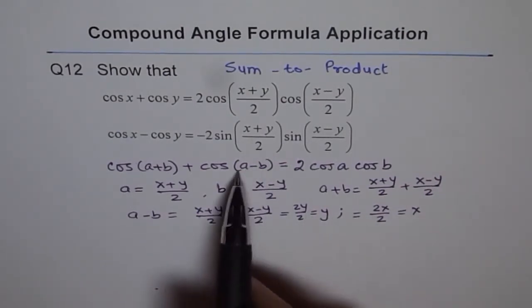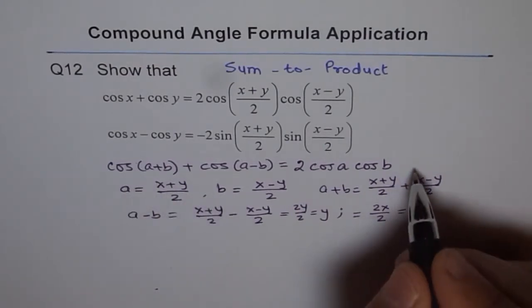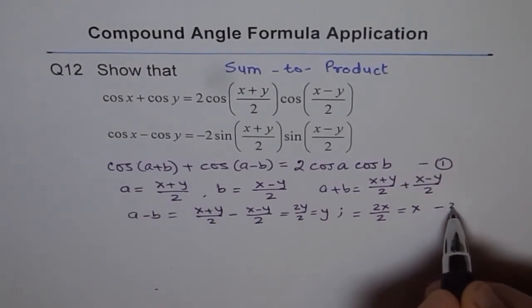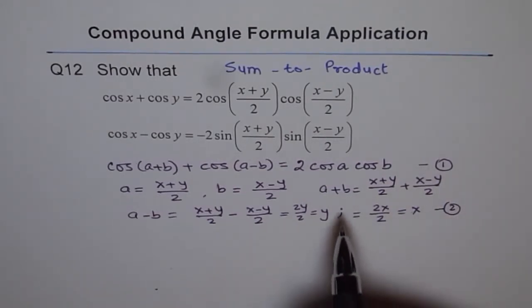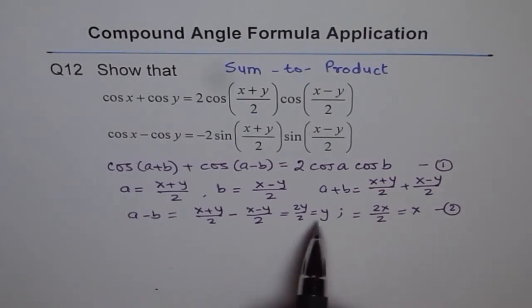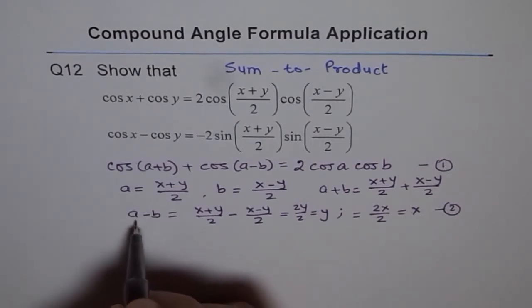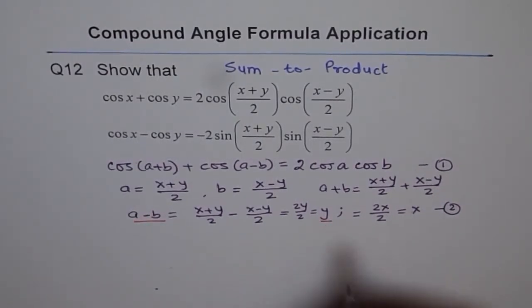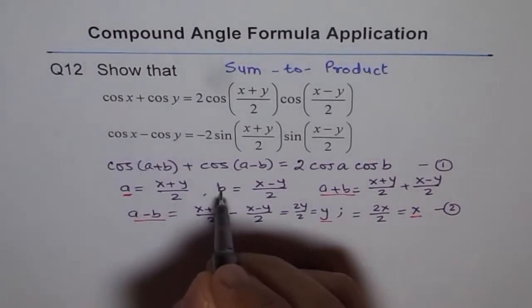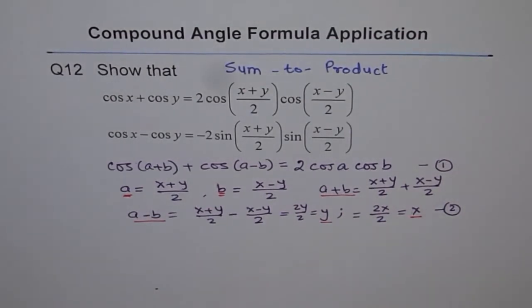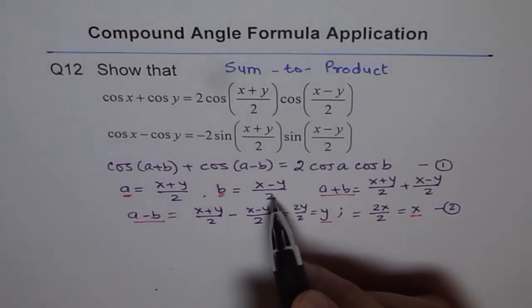So let me substitute these things back into our original equation. Let me call this equation 1, and this as 2. The values of x as a plus b and y as a minus b. So what we are doing is for a minus b, we are substituting y. For a plus b, we are substituting x. And we already know we started with a equals to x plus y by 2 and b as x minus y by 2.